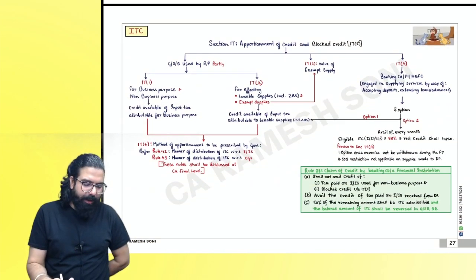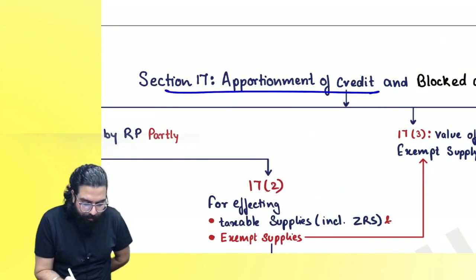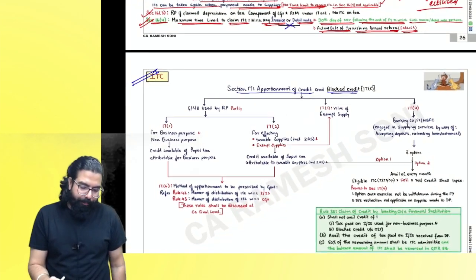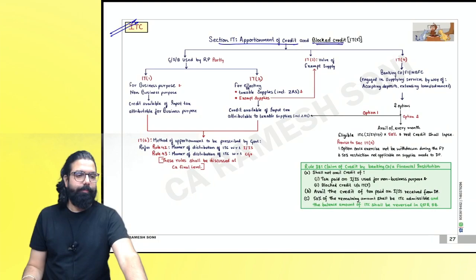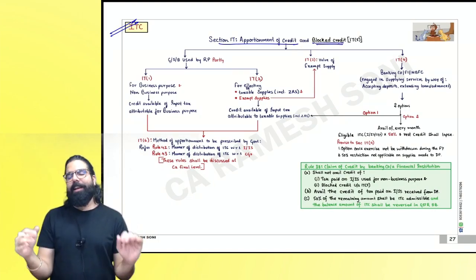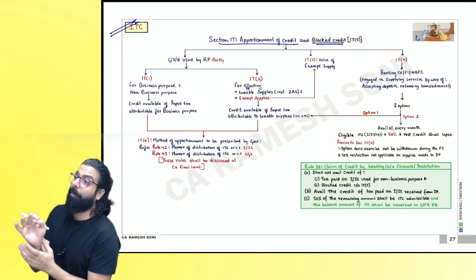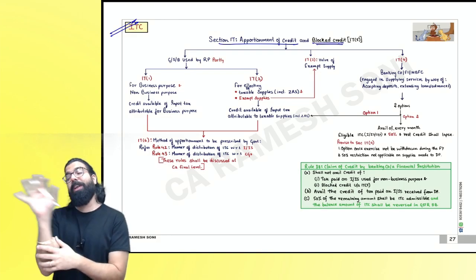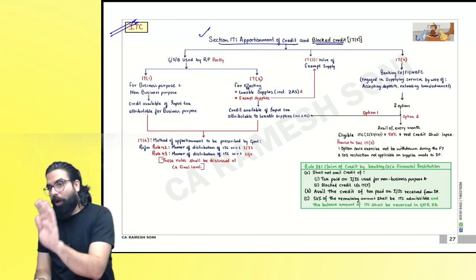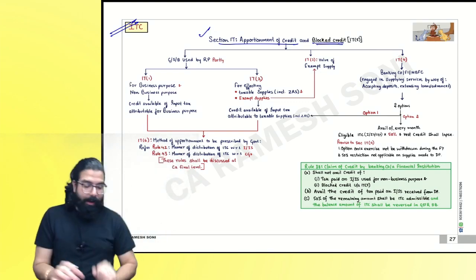Section 17 — Apportionment of credit and block credit. Section 17 has sub-sections 17(1) through 17(6). From exam point of view, Section 17 apportionment is not very important, but Section 17(5) — block credit — is very very important.